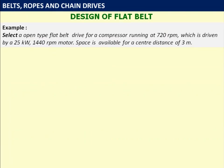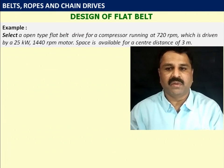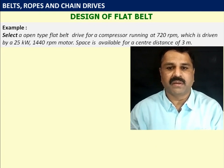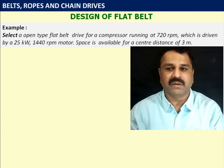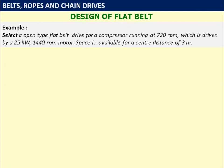Let us begin with the design of a flat belt. Select an open type flat belt drive for a compressor running at 720 rpm, driven by a 25 kilowatt 1440 rpm motor. Space is available for a center distance of 3 meters. Given data: kW transmitted = 25, speed of smaller pulley N1 = 1440 rpm, speed of driven pulley N2 = 720 rpm, center distance C = 3 meters = 3000 mm.